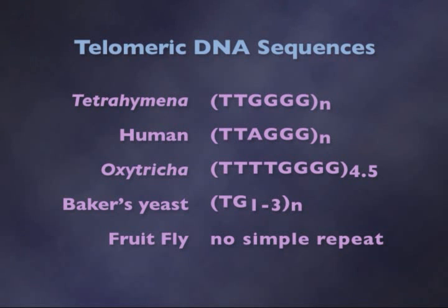There'd be a sequence T2, G4, followed by T2, G4, T2, G4, T2, G4, repeated a heterogeneous number of times. And then, of course, the other strand would have the complementary bases — so the other strand would be a series of Cs and As.